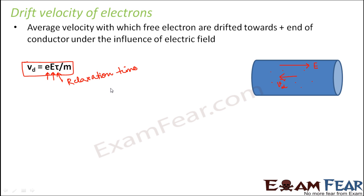So what is relaxation time? It is the time interval between two successive collisions of electrons with positive ions. Because the moment you apply an electric field, there are so many electrons inside the conductor, and when they start drifting they also experience collisions. The time interval between two successive collisions of electrons with positive ions is called relaxation time.